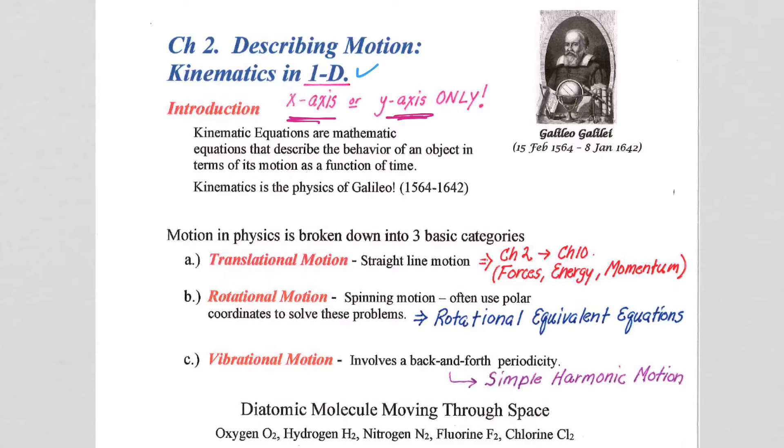Galileo lived from 1564 to 1642. Isaac Newton, who will play a major role in our course this year, was born in 1642, was in his 20s, so we're looking at 1660s, when he formulated his laws of physics, which really ushered in the world of modern physics, the age of modern physics to us.